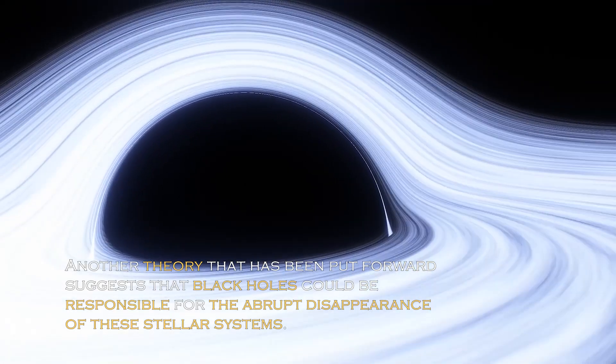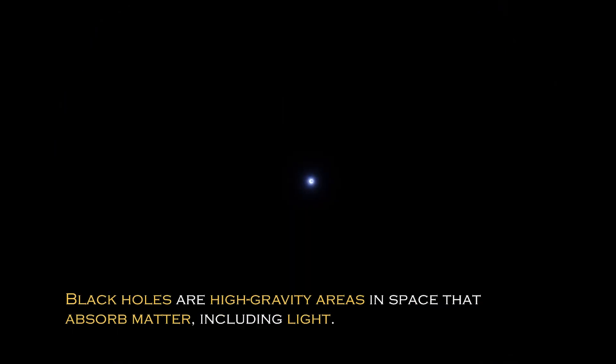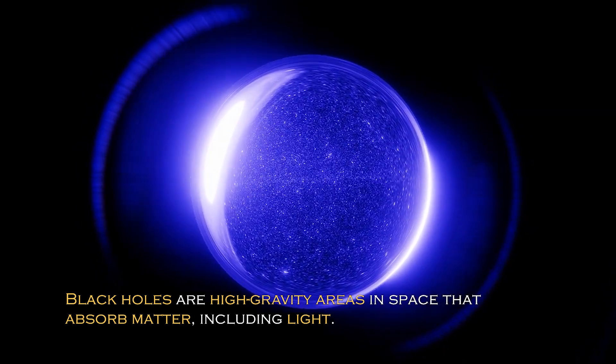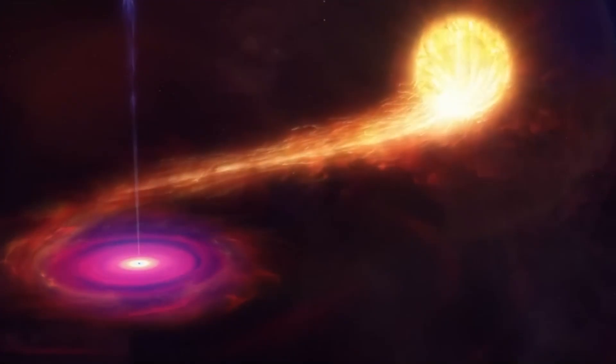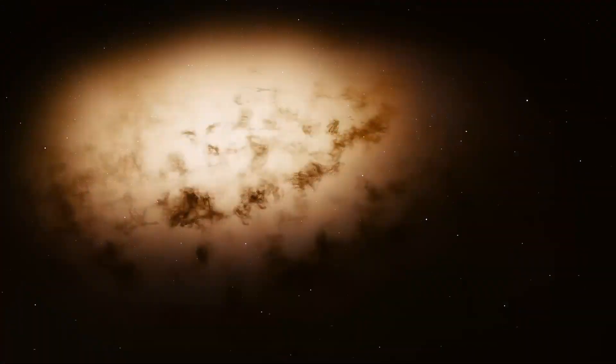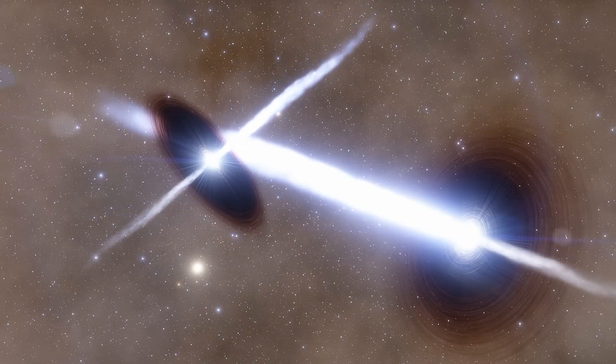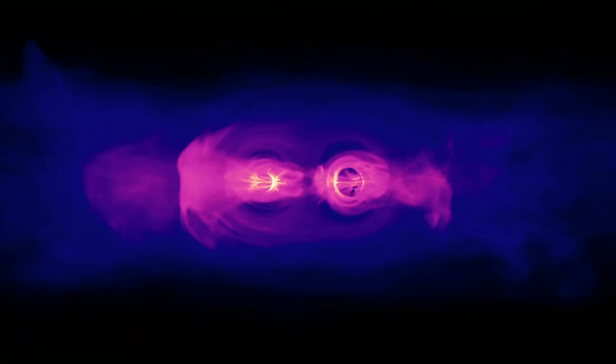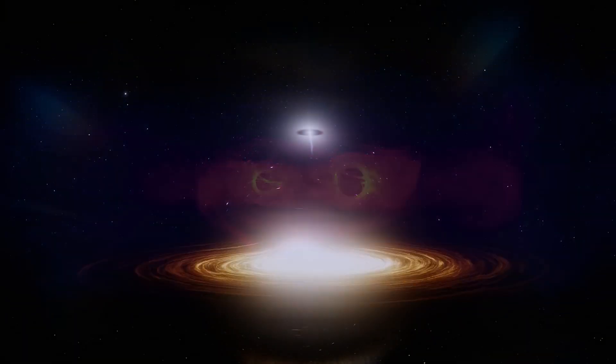Another theory that has been put forward suggests that black holes could be responsible for the abrupt disappearance of these stellar systems. Black holes are high-gravity areas in space that absorb matter, including light, and are sometimes absorbed consuming entire stars. However, the theory of black holes as the cause of the massive disappearance of trillions of stars seems unlikely. It would require an excessive number of black holes to eliminate such a huge number of stars, which does not seem logical or consistent with what we know about these astronomical phenomena.